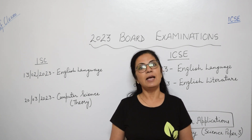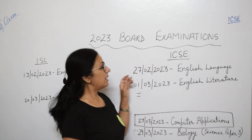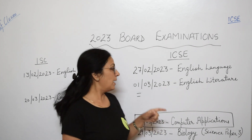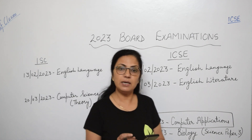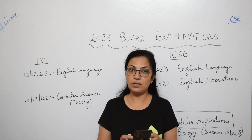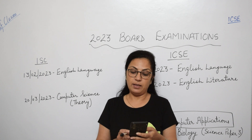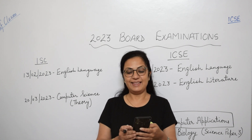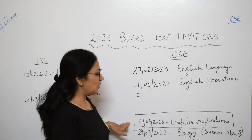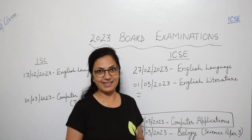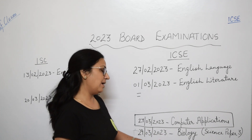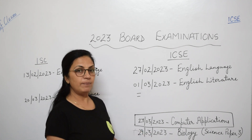For ICSE, your exams are starting from 27th February and the first paper is English Language. Then on 1st March you have English Literature. Please note the important dates: 6th March History and Civics, 10th March Maths, 13th March Geography, 17th March Physics, 20th March Chemistry, and 23rd March Computer Applications.